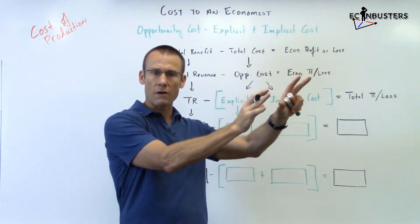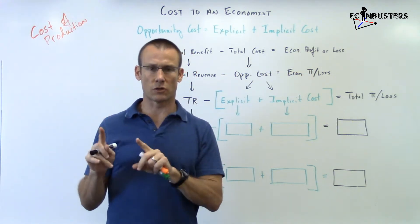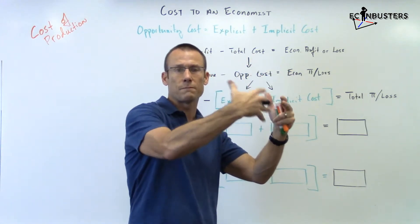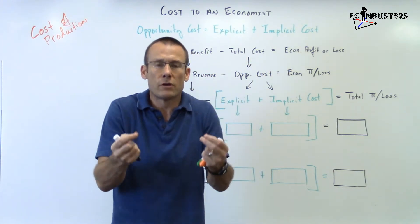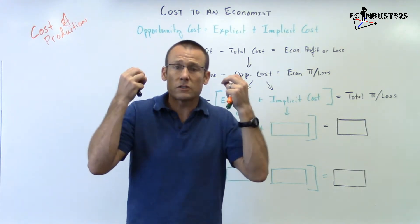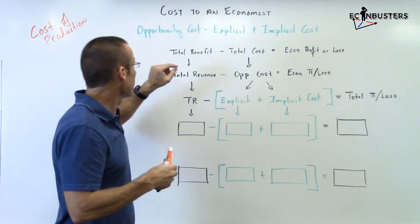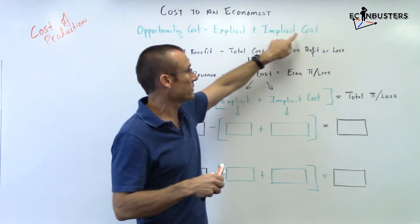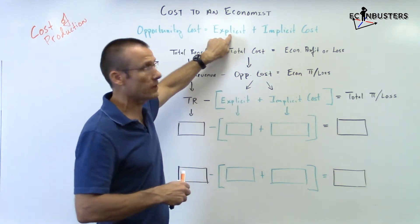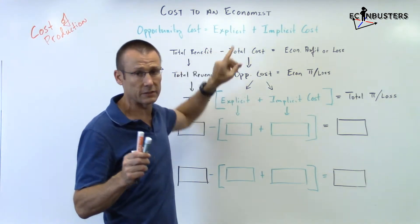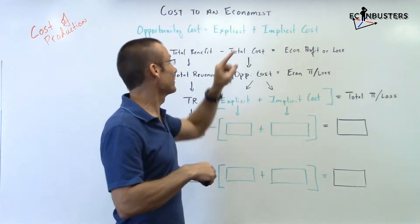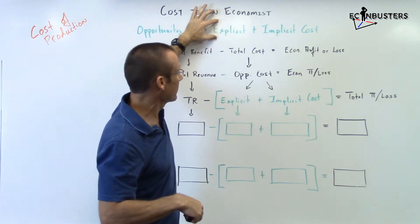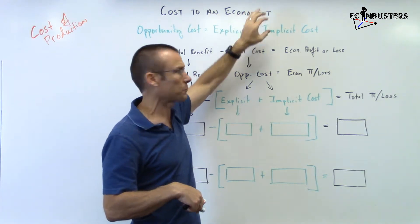Implicit costs are the foregone profits — what we call accounting profits — you would have made from the next best alternative. If you would have used your resources in the next best alternative way, the profits you would have made from that are a cost. They are a real cost, but you don't have to pay that money. So to an economist, opportunity cost is both explicit plus implicit. Don't forget that the economist looks at both and adds those two together.